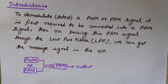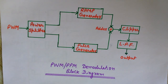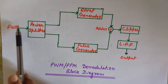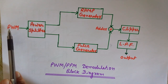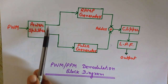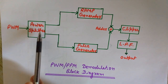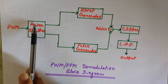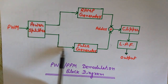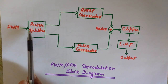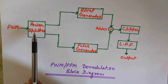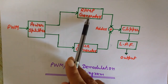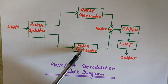Let's see the block diagram and waveforms for the demodulation of PWM and PPM. We have the PWM signal and we pass it through a power splitter. The power splitter's job is to split or divide the power — for example, if we have 30 watts, 15 watts go in each direction. One path leads to a ramp generator and the other to a pulse generator.